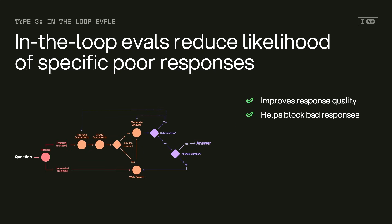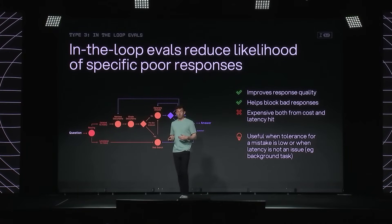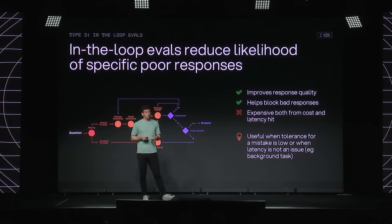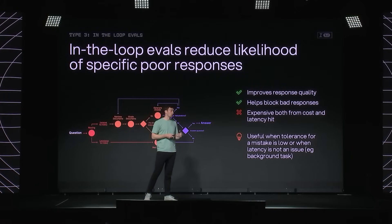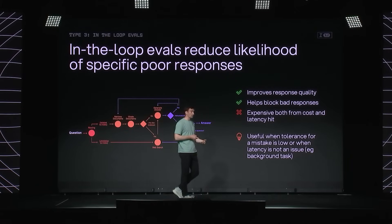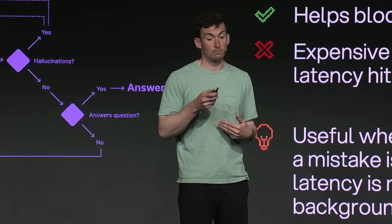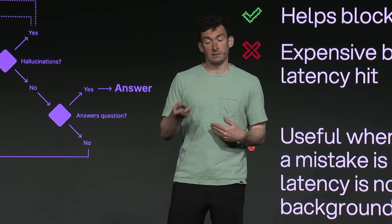In-the-loop evals have some obvious benefits: they improve response quality, and you're not monitoring after the fact — they actually improve the response before it goes out and can block bad responses. The big downside is that this takes more time and costs more money. We see this commonly being used when the tolerance for mistakes is really low or when latency is not an issue. As we see more and more long-running agents, I think that's a perfect time to start thinking about putting in-the-loop evals into your agent.